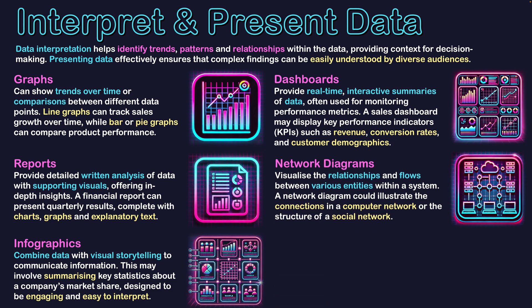The fifth category is network diagrams. These visualize the relationships and flows between various entities within a system. This could be a diagram representing a local area network within a business or a larger enterprise network, showing how computer systems are connected to routers and switches, and we can see clusters or segmentation in the network. They can also illustrate the structure of social networks and help plan network infrastructure.